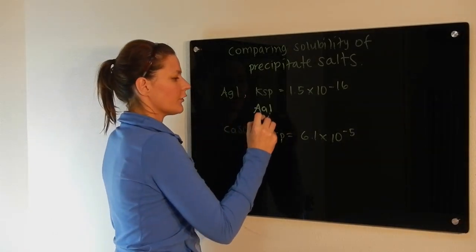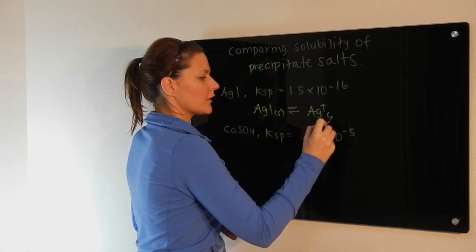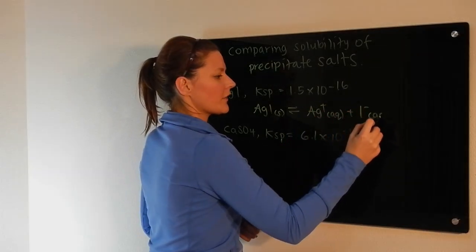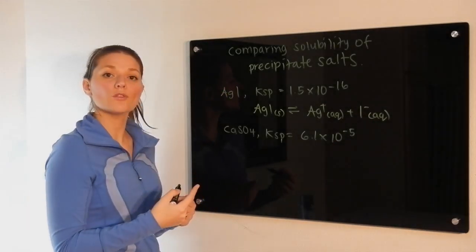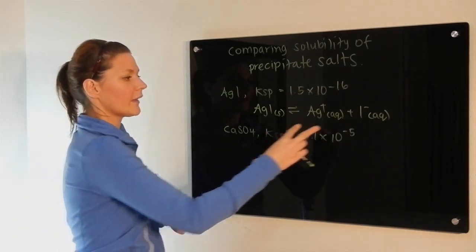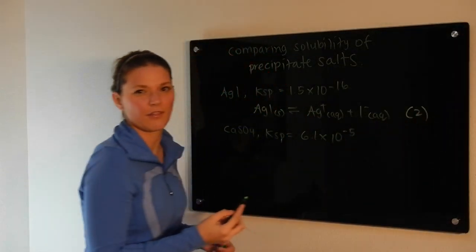So the silver iodide will reach an equilibrium where some of its silver ions will dissolve back into solution as well as some of its iodide. If you notice, when the silver iodide does have a partial dissolving, it breaks up into two ions. I'll just put a two there to remind us of that.